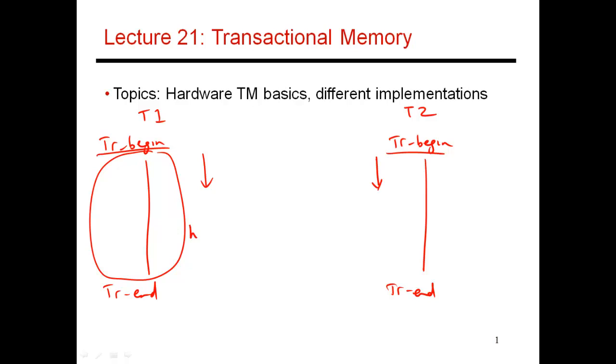If this thread is only modifying head and this thread is only modifying tail, when you get to the transaction end, I do a check to see what all did you touch? What all did this other transaction touch? If you touch different elements, then both of these transactions get to commit at the same time. They both commit successfully, and you move on.